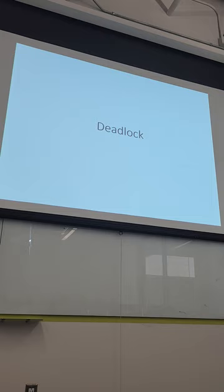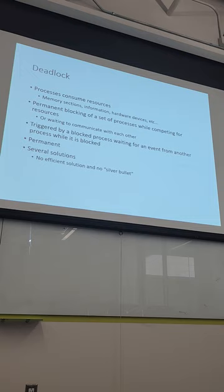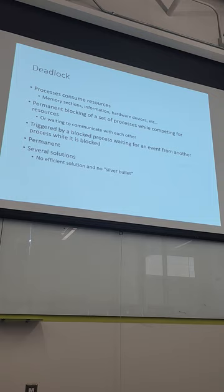When multiple processes try to access the same resource, it's possible to get into deadlock. Deadlock occurs when you have shared resources — memory, information, hardware devices — and each process puts a block on the resource it needs. If process one is waiting on process two's resource while holding the resource process two needs, and vice versa, they'll both always be waiting.